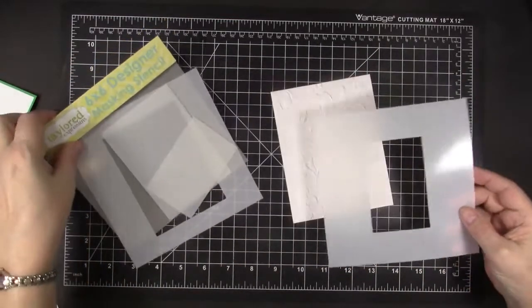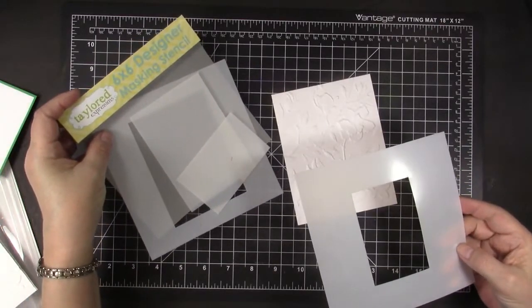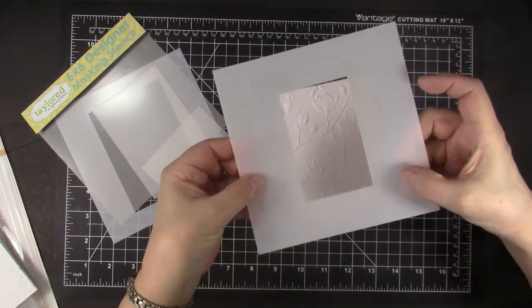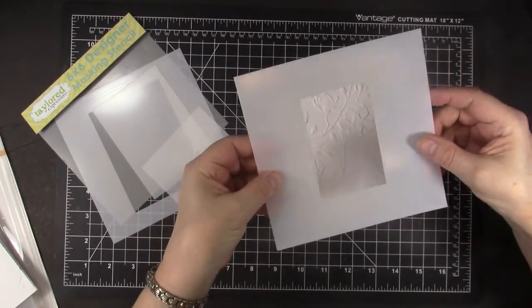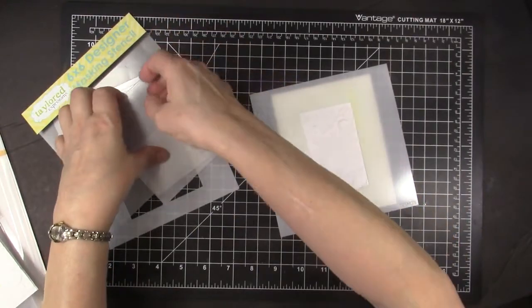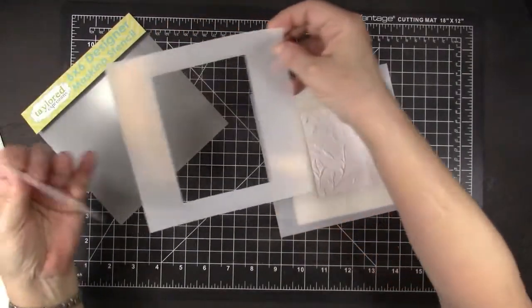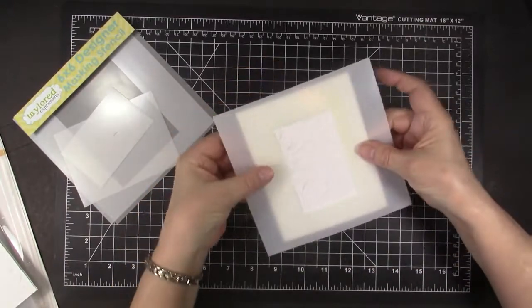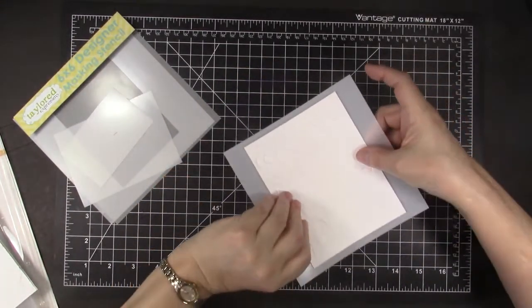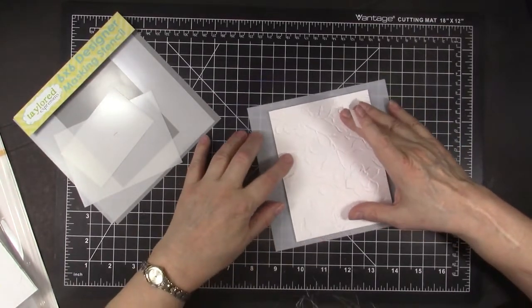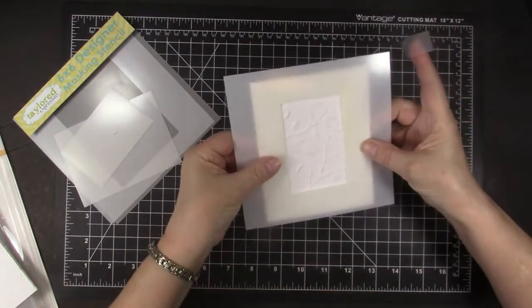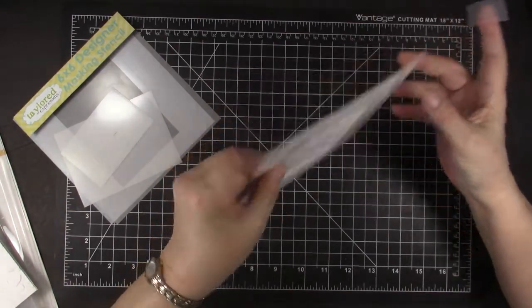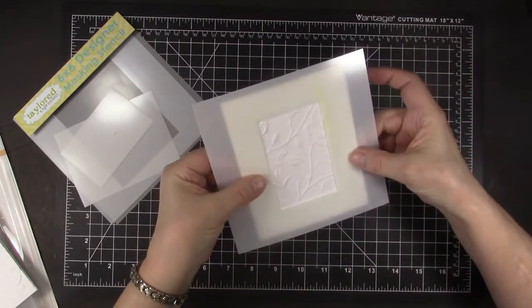And then I have another one of these Tailored Expressions Designer Masking Stencils. And this set is very cool. It has a rectangle, and once again, it has those lines that I showed you. It makes it very easy to line up perfectly on the front of an A2 card. And it also has a second option, which is again another rectangle. This time it's a bigger one with those lines. So I highly recommend these. I tried to cut my own, but these are just perfect. So we're going to line this card front up with those lines on the stencil to make it stay in place perfectly.